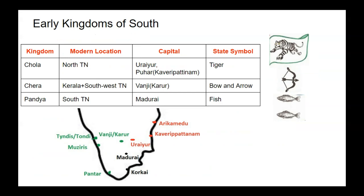Each kingdom had its own state symbol depicted on their flags. The Chola had the state symbol of Tiger. The Chera had the state symbol of Bow and Arrow, and the Pandya had the state symbol of Fish. The important cities of Chola, Chera and Pandya Kingdoms are shown in the figure below.